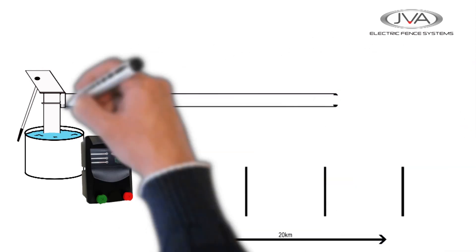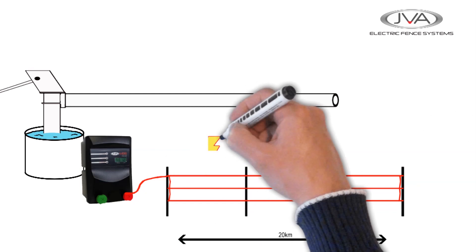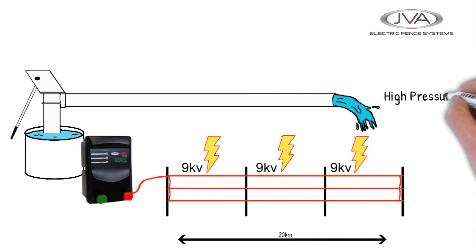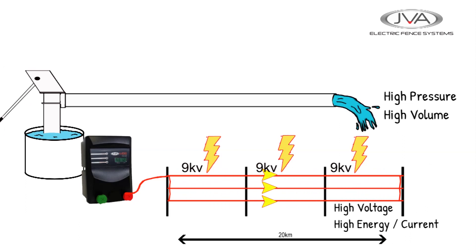So to get more water to flow through the pipe, you can put a bigger pipe onto the pump, allowing more volume to flow through. And with an electric fence, we can add more wires in parallel. This will allow more energy or current down the line.